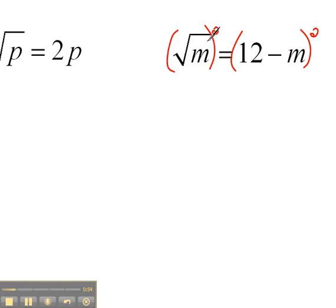So now the square of the square root is just going to be m equals, but this, 12 minus m squared, that really means 12 minus m times 12 minus m. We need to write that out twice and multiply that out.